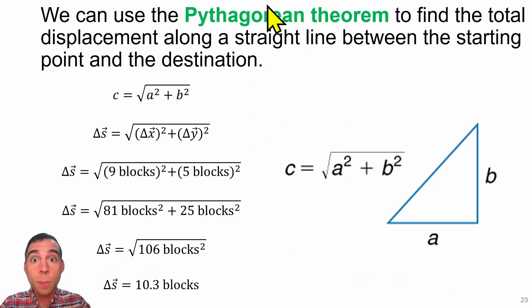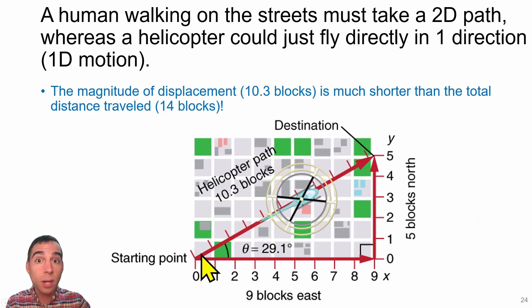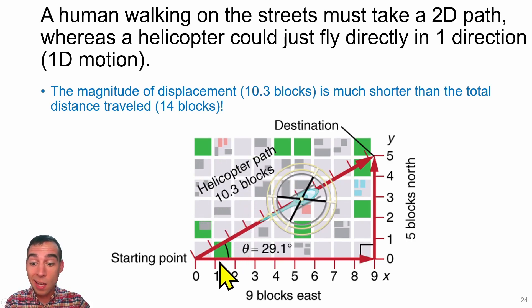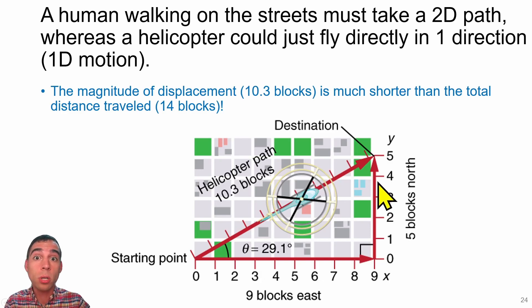Here we have motion in the x direction and motion in the y direction, which means we can use the Pythagorean theorem to figure out the true distance between these points—the true displacement. We see that if you were to take the route a bird or helicopter would fly, it would actually only be 10.3 blocks. Whereas if we take the route according to the two separate components, we walked nine blocks plus five blocks for a total distance of 14, while the displacement was only 10.3.